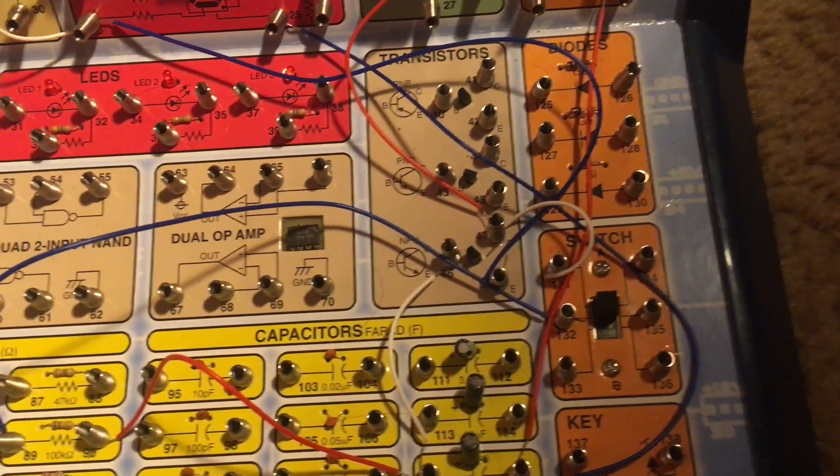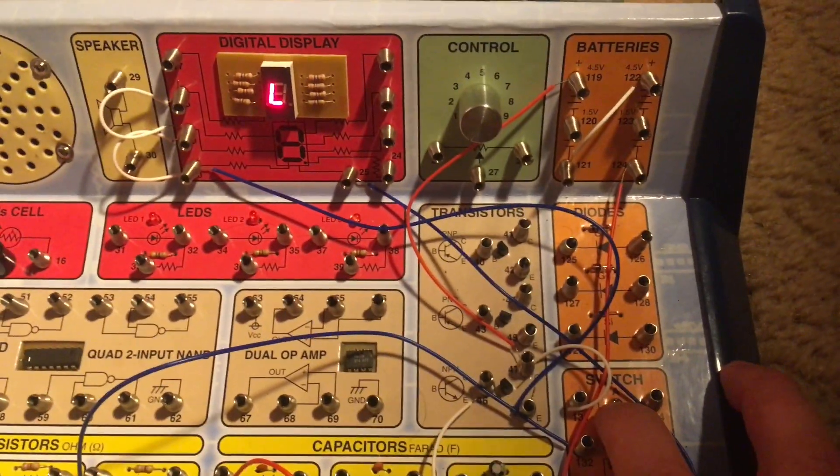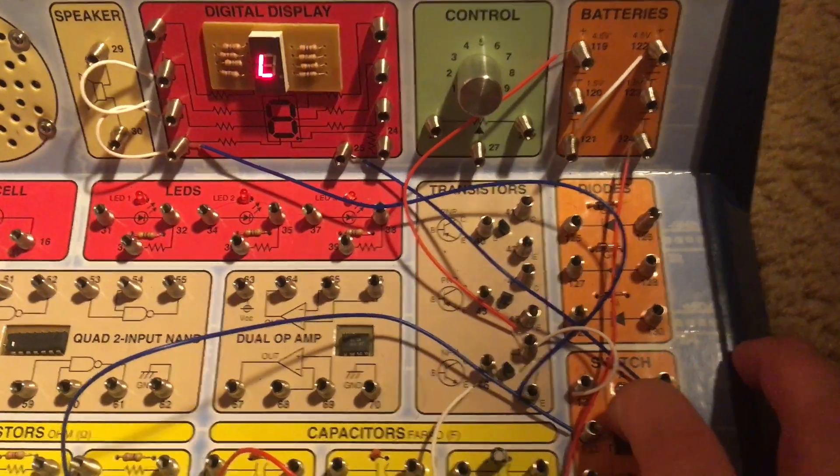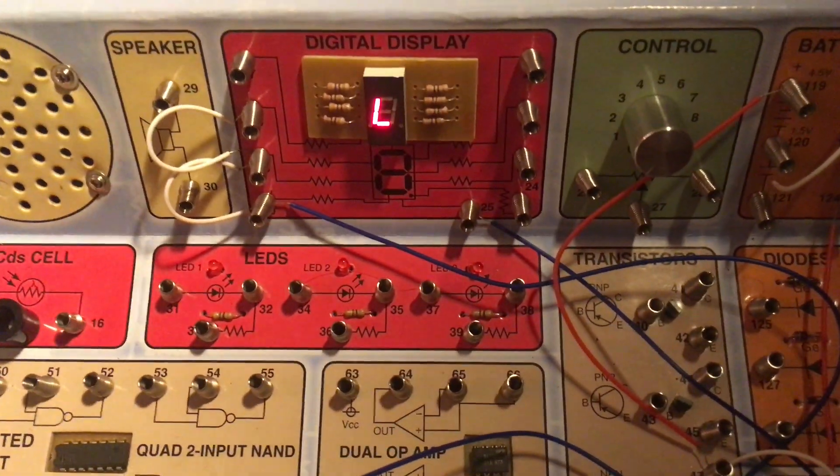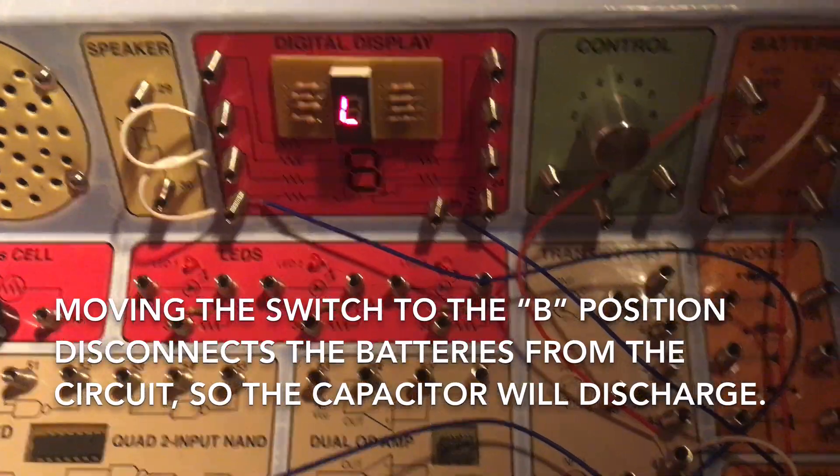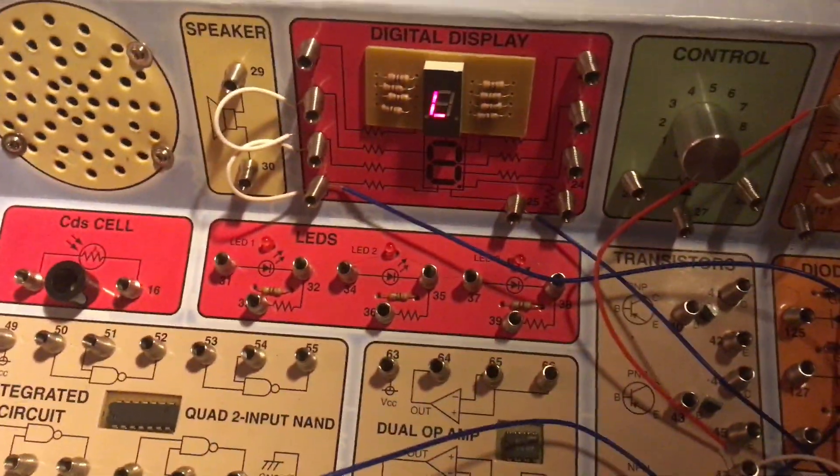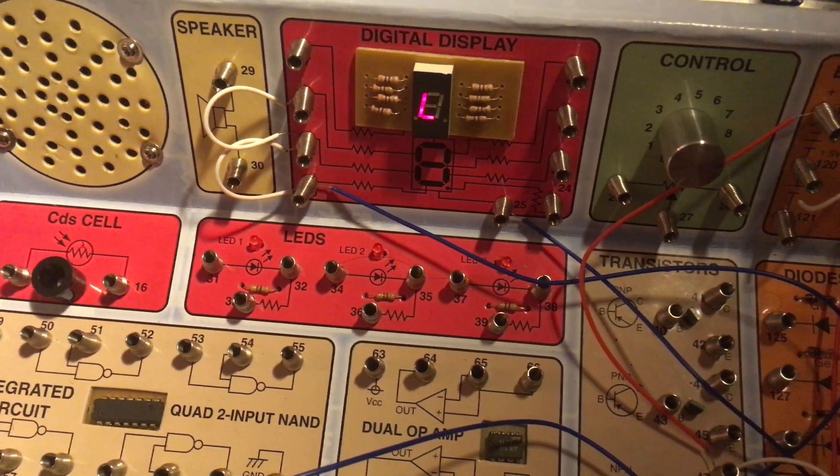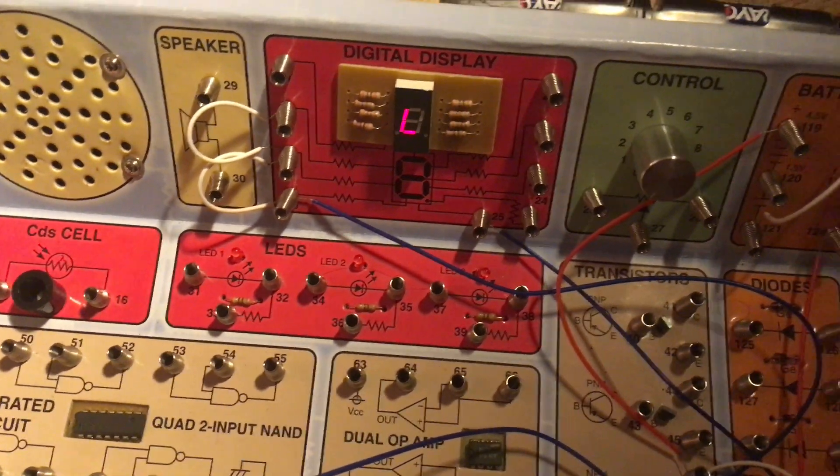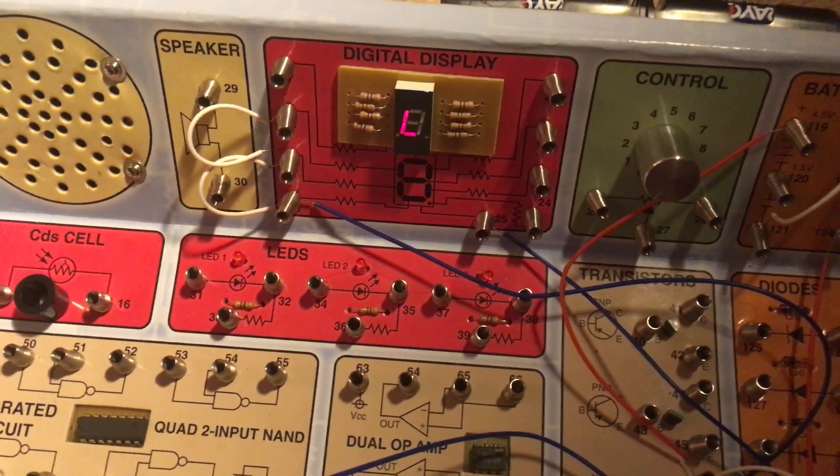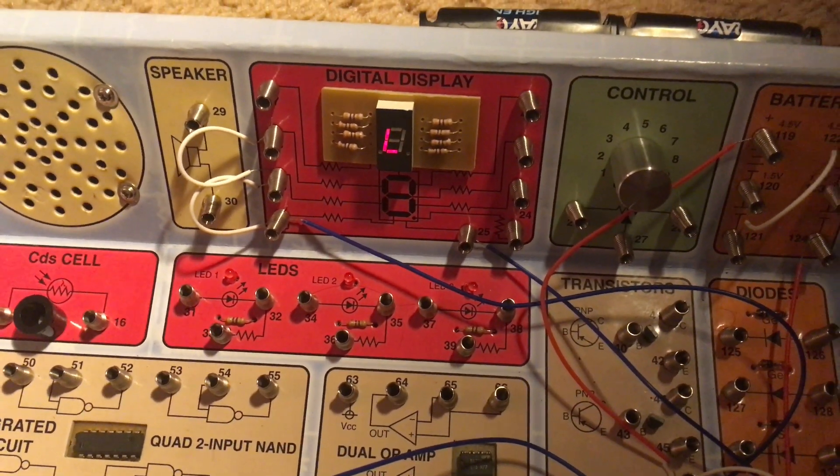When I move the slide switch back to position B, the display will gradually dim as current discharges from the capacitor. It will take some time but eventually the display will turn off completely as all the capacitor energy is used up.